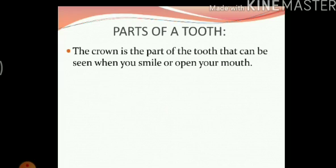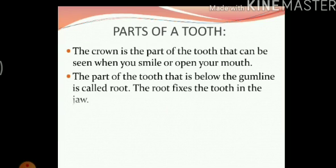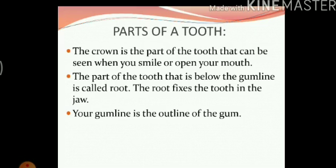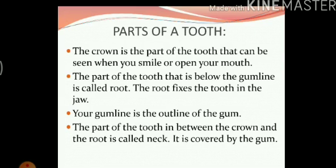The part of the tooth that is below the gum line is called the root. The root fixes the tooth in the jaw. The root is inside the gums and the gum line is the outline of the gum — that line where the white enamel ends and your pink gum starts. The part of the tooth in between the crown and the root is called the neck.